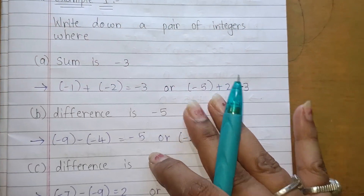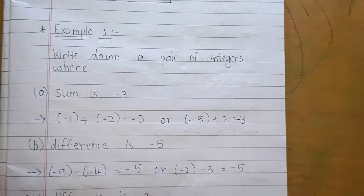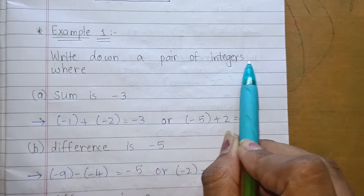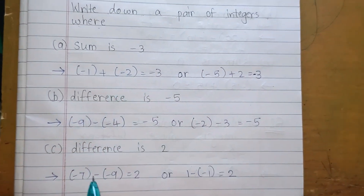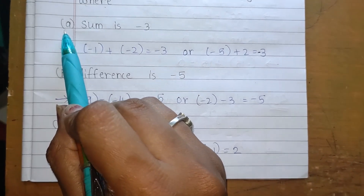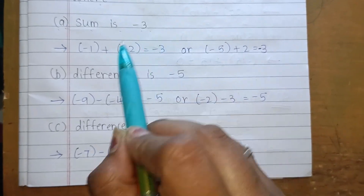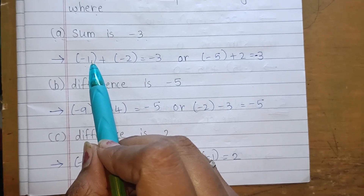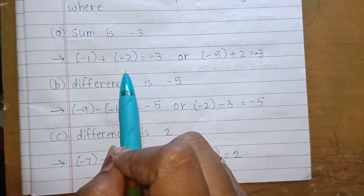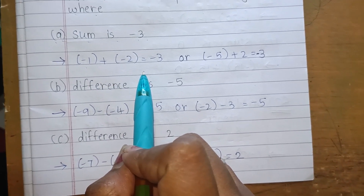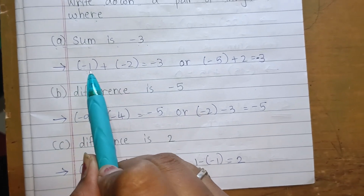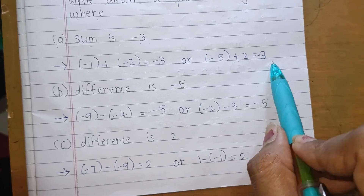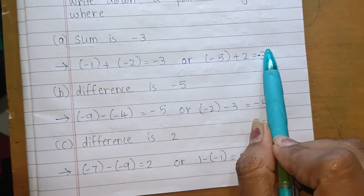Now we will go with Example Number 1. The question says: write down a pair of integers. Part a: sum is minus 3. We can give examples by our own. You can ask me in the comments if your example is correct. Answer: minus 1 plus minus 2 equals minus 3, or minus 25 plus 22 equals minus 3.